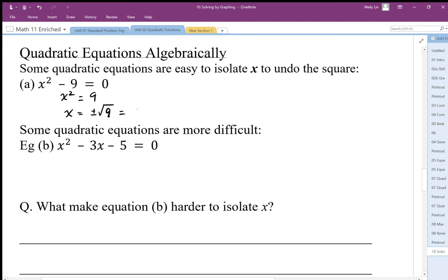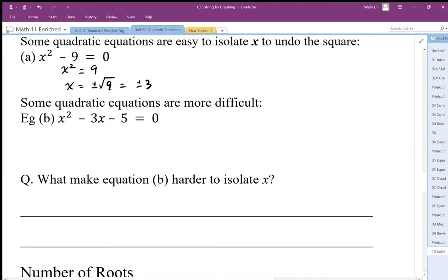Now this quadratic we cannot solve by algebra very easily because it's hard to get rid of the minus times and squared. In fact, it's not so much the minus but it's the times 3 and the squared is happening on the x at the same time, and we cannot get rid of a squared with a double and a times at the same time.